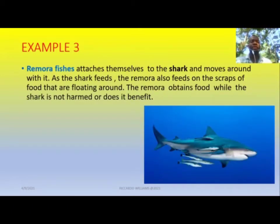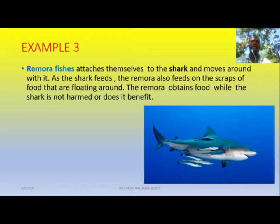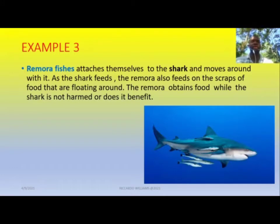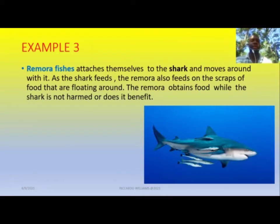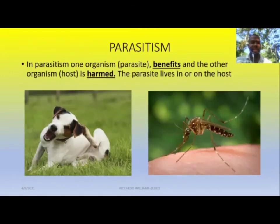Another example of commensalism is remora fish that attach to the shark and move around with it. As the shark feeds, the remora fish feed on the scraps of food floating around — sharks feed very messily, so particles always come off. These remora fish catch all the particles passing by, getting free food just by attaching themselves to the shark. The shark doesn't benefit from this relationship, but is not suffering from it either, while the remoras benefit a lot by getting free food.